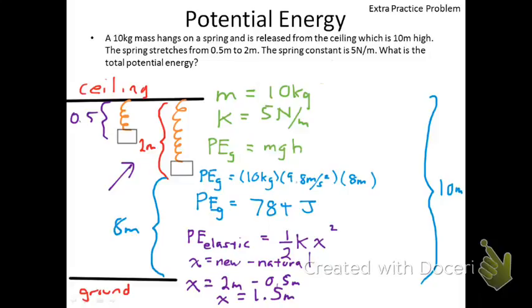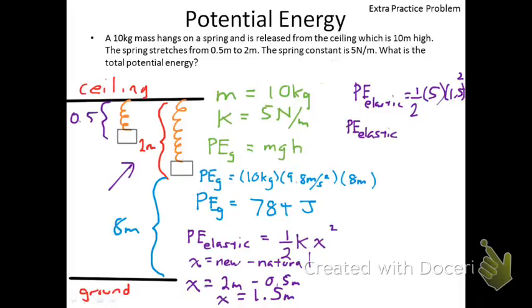Once that is established, we can go ahead and calculate the potential energy due to the elastic. PE elastic equals one half - I'm actually going to leave out units because I'm running out of room here - times 5 times 1.5 squared. Once we do this, PE elastic equals, let's do it right now, 0.5 times 5 times 1.5 squared. Not a big number, especially if the spring constant is pretty weak. 5.625 joules.